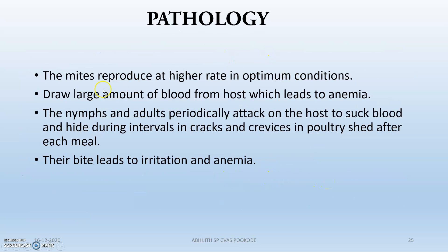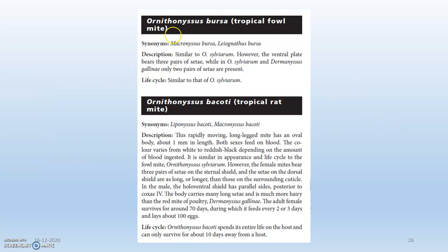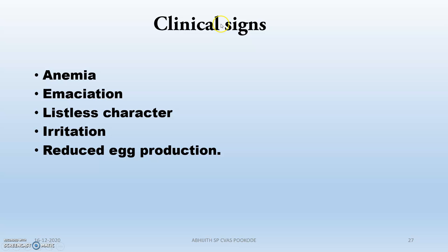Moving to pathology: the mites reproduce at a high rate and draw large amounts of blood, which leads to anemia. Ornithonyssus bursa and Ornithonyssus bacoti are very important species in this regard. The clinical signs are the same as for Dermanyssus: anemia, emaciation, listlessness, irritation, and reduced egg production.